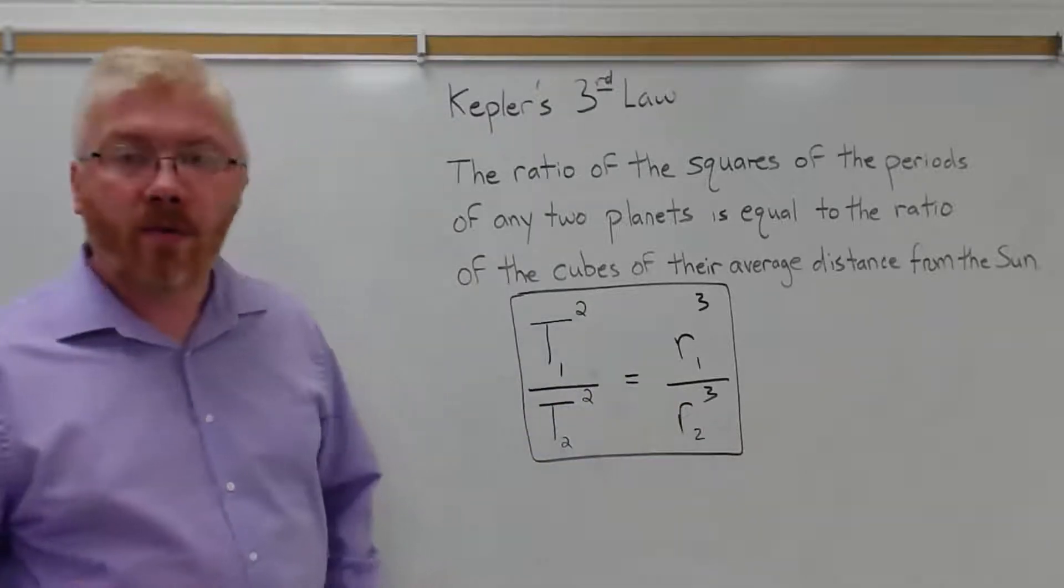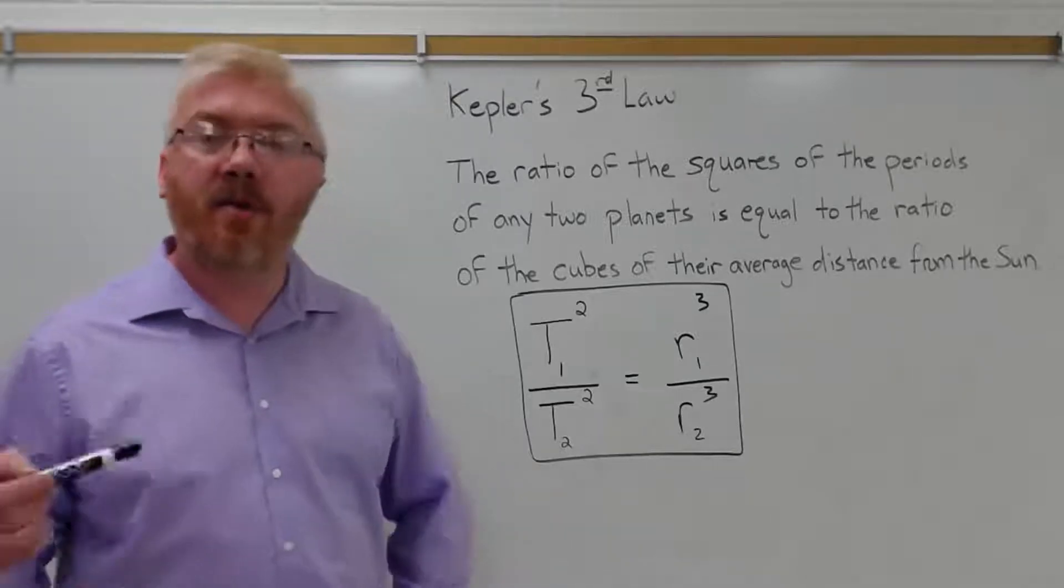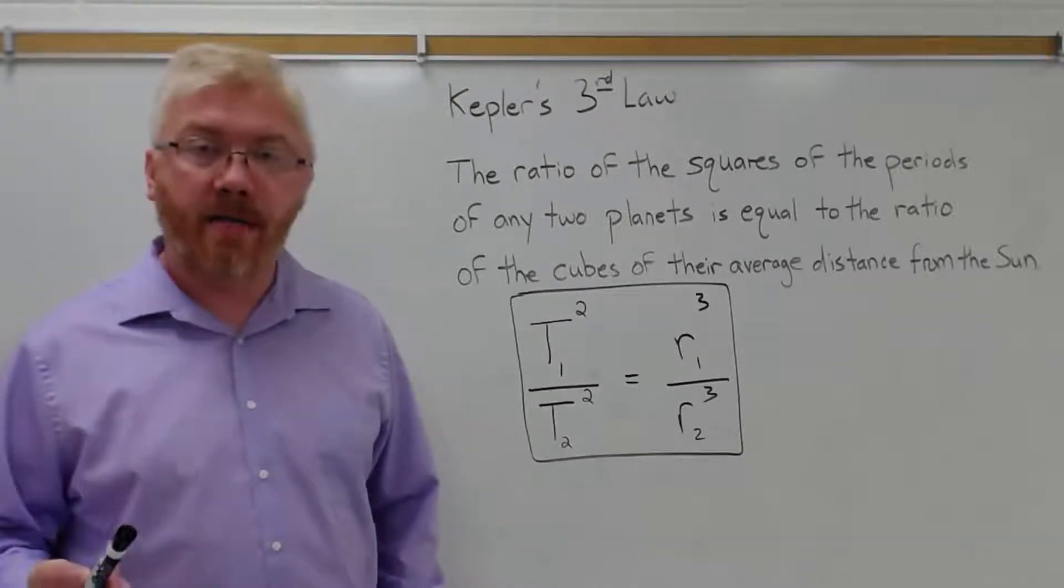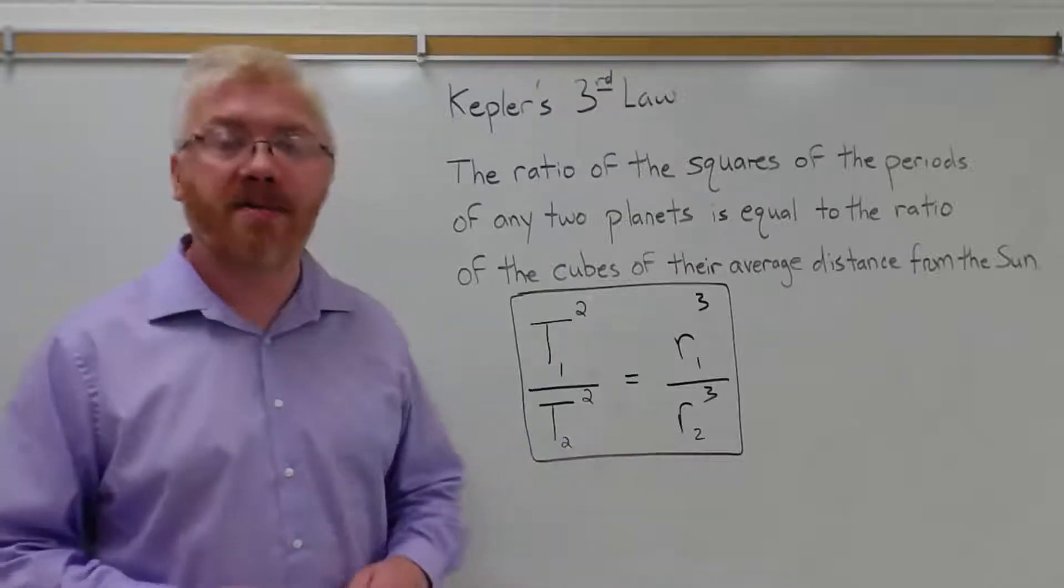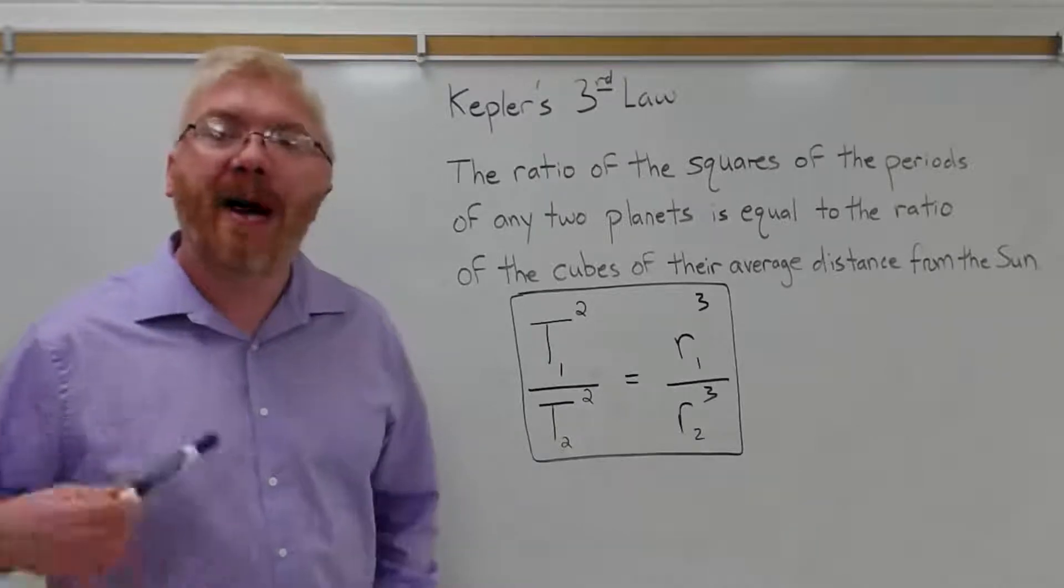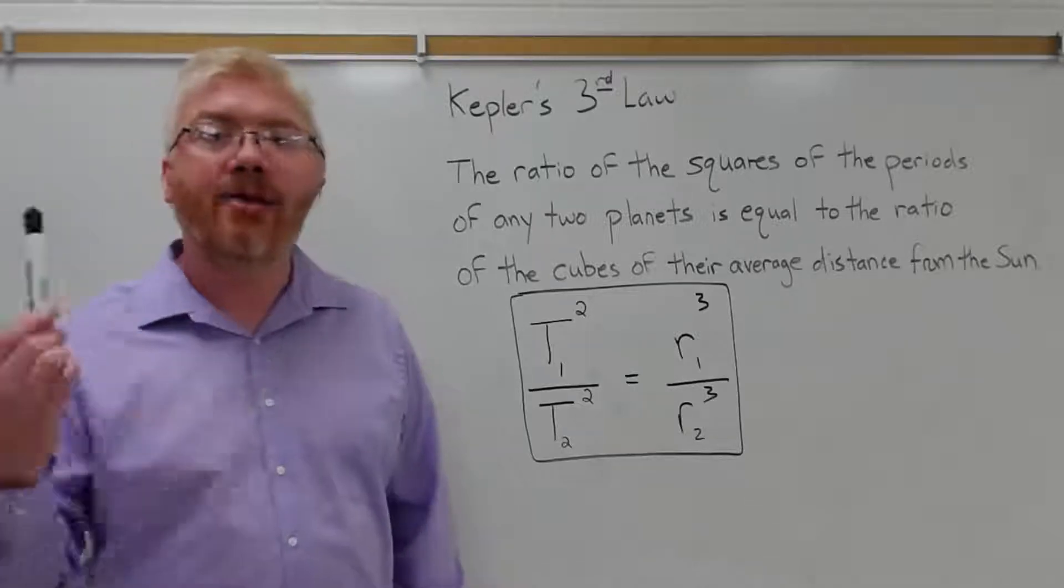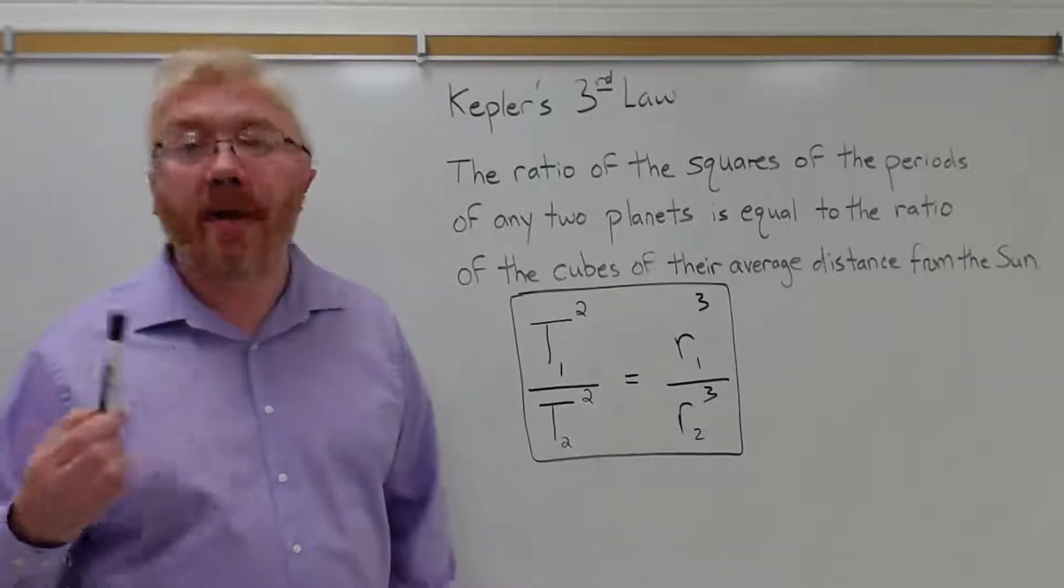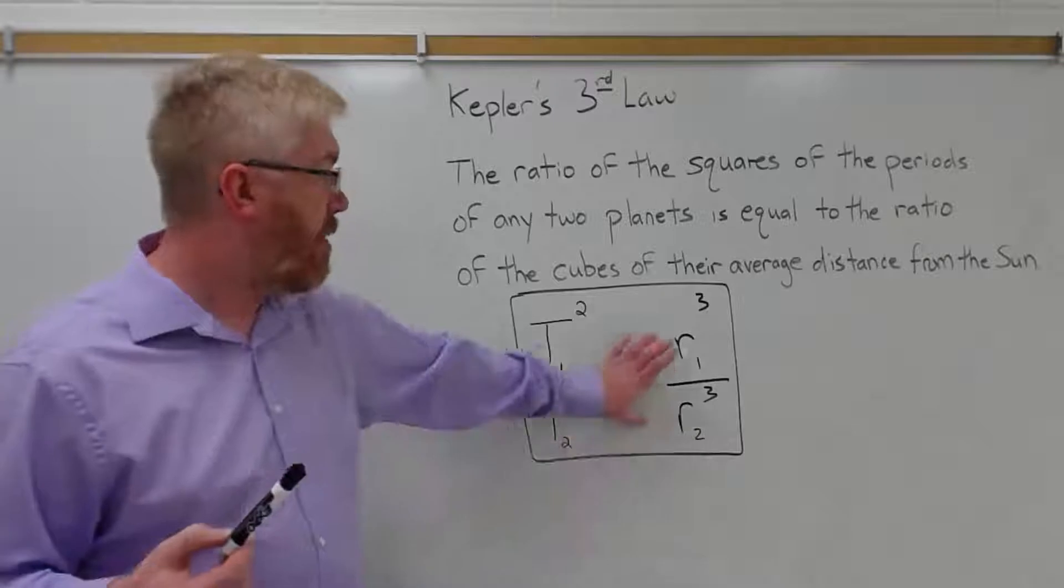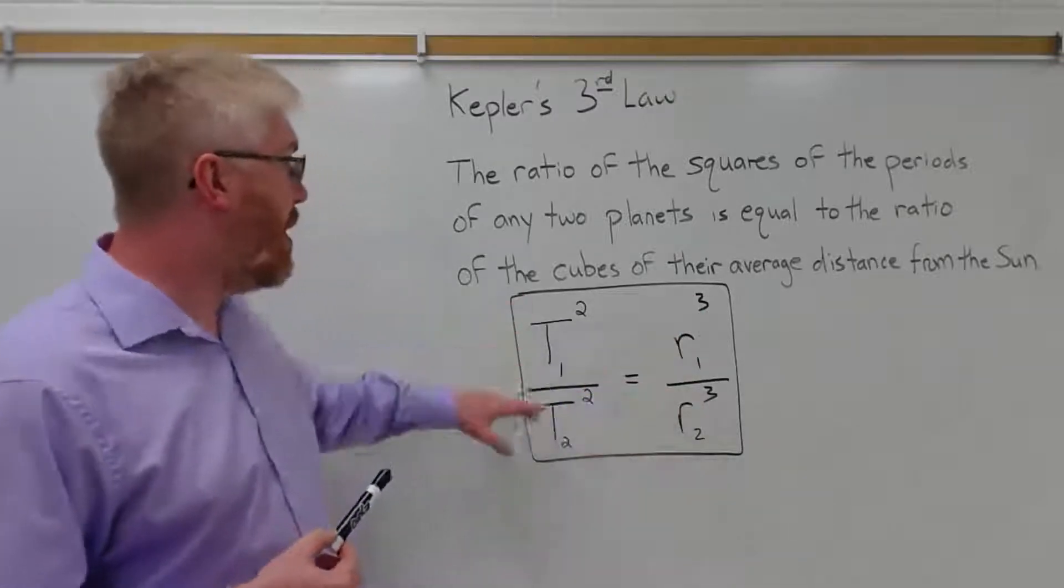So if we know, for example, how long it takes the Earth to go around the Sun, and the average distance the Earth is from the Sun, and we know how long it takes Mars to go around the Sun, we can solve and figure out how far away Mars is from the Sun on average. This is a pretty powerful technique. It means that the planets, since they all orbit the Sun, have a relationship with one another, that the periods and the semi-major axes are the average distances from the Sun. Another phrase for that is called the semi-major axis. But the average distance from the Sun cubed is related to the period squared.